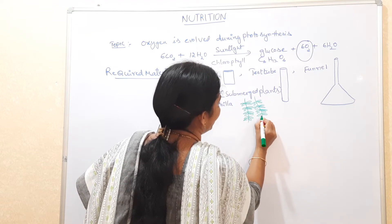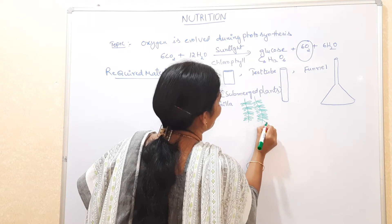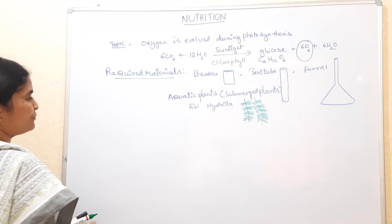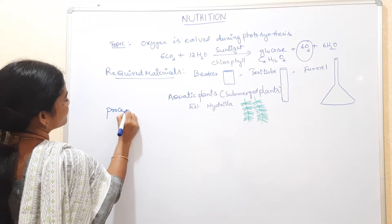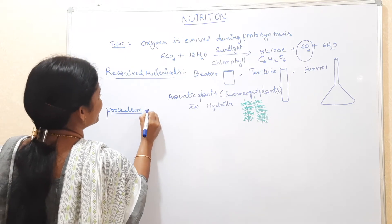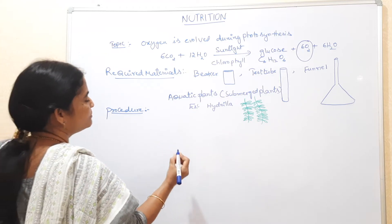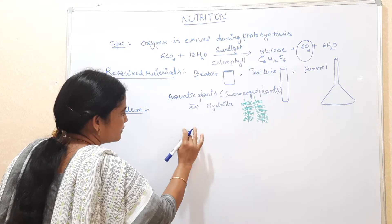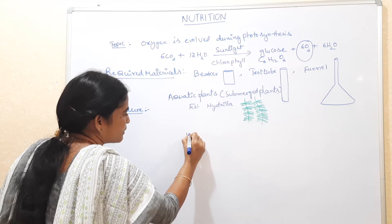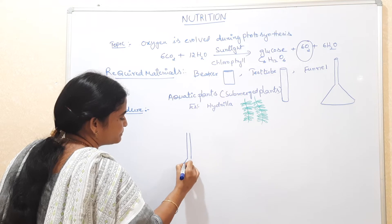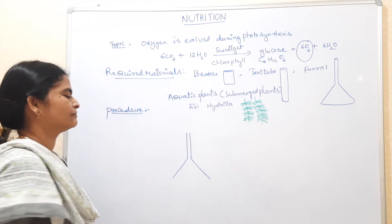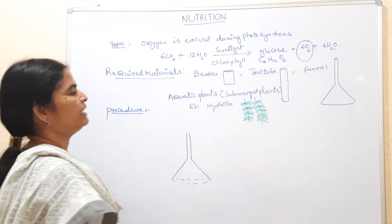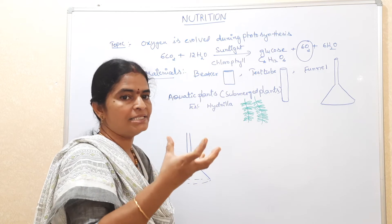We can take any aquatic plant for this experiment, but we are taking hydrilla here. Now we have to do the experiment. By doing the experiment only we can understand everything. First, take a beaker, then take the funnel. In the funnel we need to keep hydrilla plants — make a bunch of hydrilla plants.